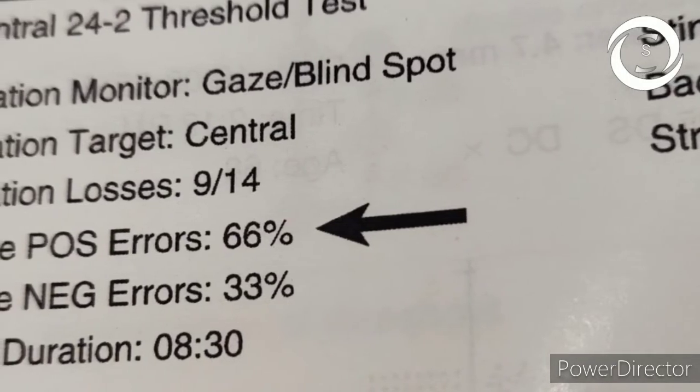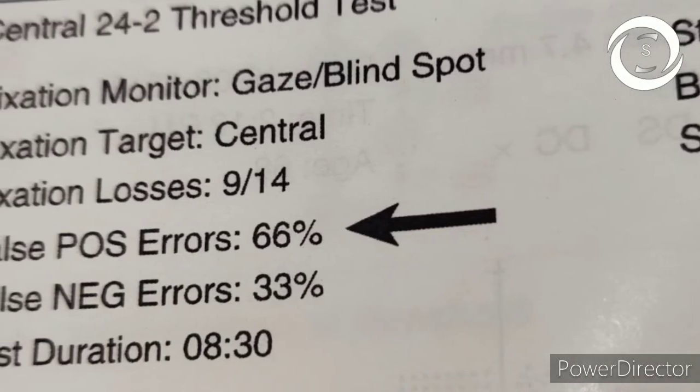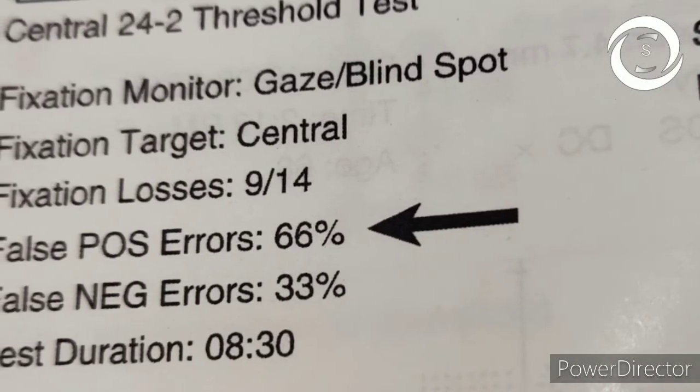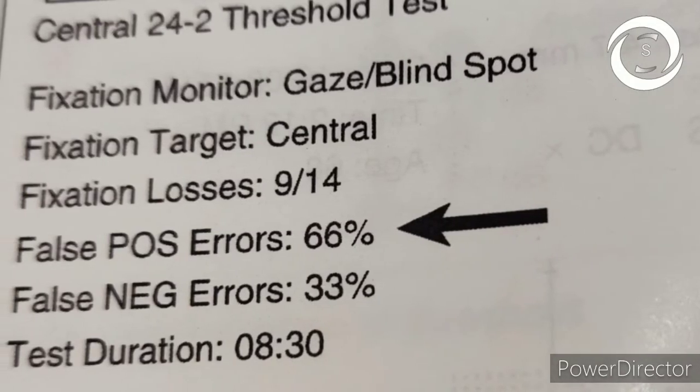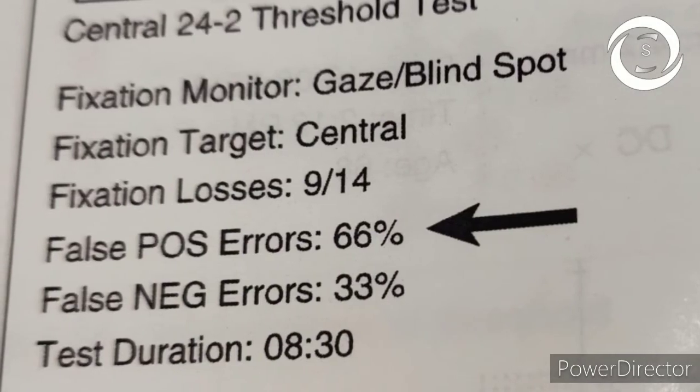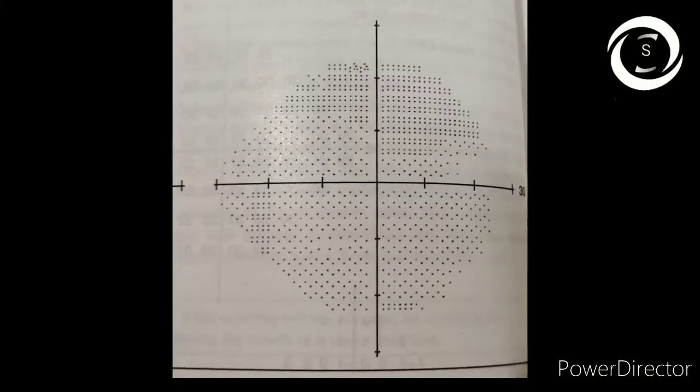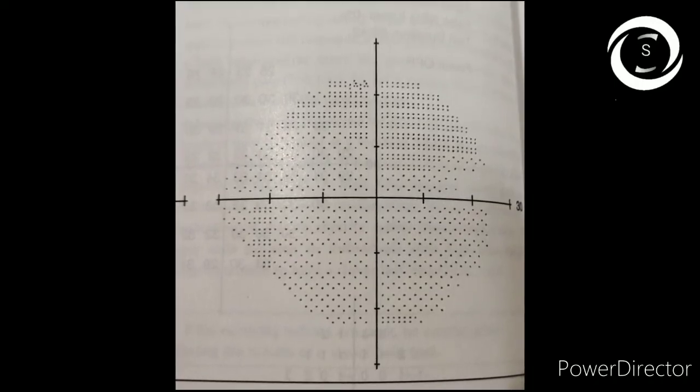But sometimes blind spot enlarges in diseases and test will be accurate despite high fixation losses. Some machines elicit audible voice along with visual target, and few times no visual target is given but only sound is given. If patient clicks on the sound, the false positive is recorded. These patients are called trigger happy patients, and then you will get very pale gray scale on printout.